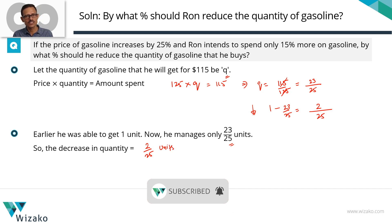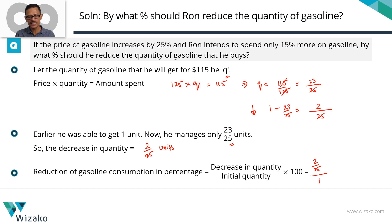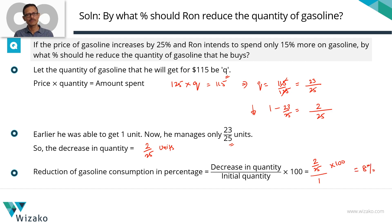What's the percentage decrease? The formula to compute percentage decrease is: decrease divided by initial quantity, times 100. The decrease is 2/25 units, and the initial quantity is 1 unit. So percentage decrease = (2/25) / 1 × 100 = 200/25 = 8%.